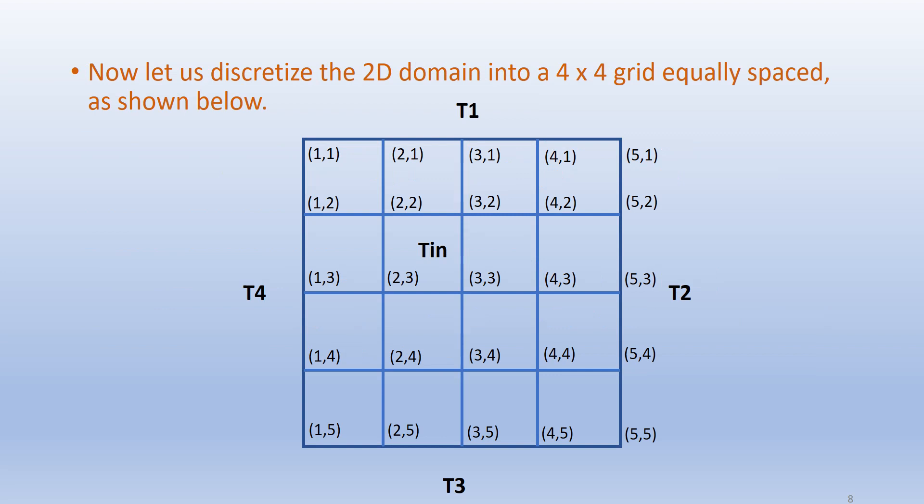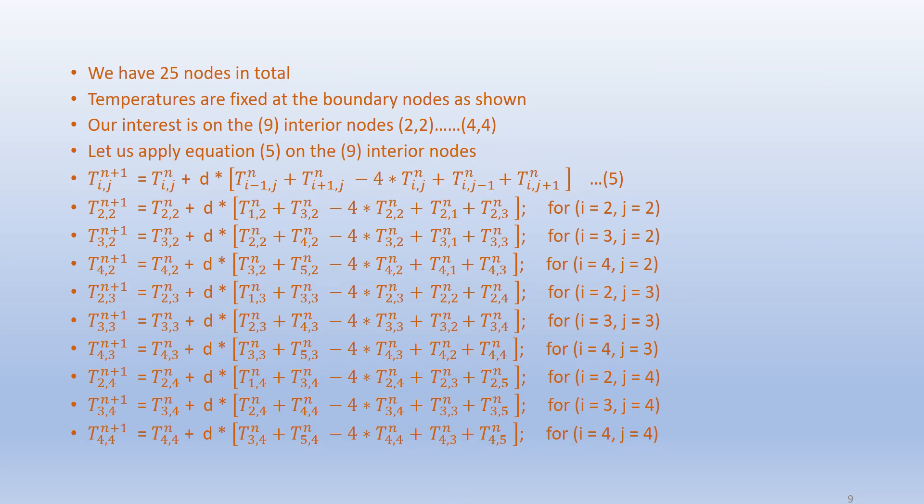Now let us discretize the 2D domain into a 4×4 grid, equally spaced. We have 25 nodes in total. Temperatures are fixed at the boundary nodes as shown earlier. Our interest is on the 9 interior nodes from node (2,2) to (4,4). Applying Equation 5 on the 9 interior nodes, we get: T[2,2]^(n+1) = T[2,2]^n + d×(T[1,2]^n + T[3,2]^n - 4·T[2,2]^n + T[2,1]^n + T[2,3]^n), for i=2, j=2. Likewise, similar equations are obtained for the other interior nodes.